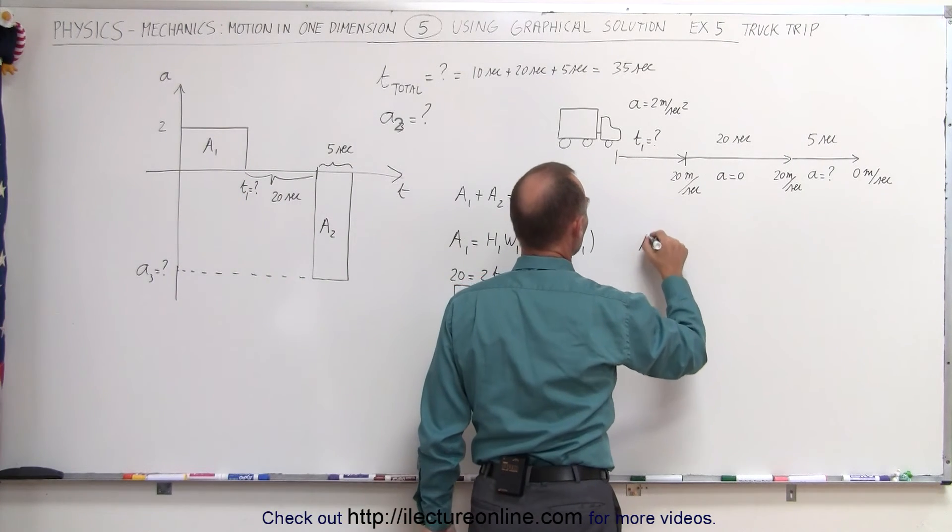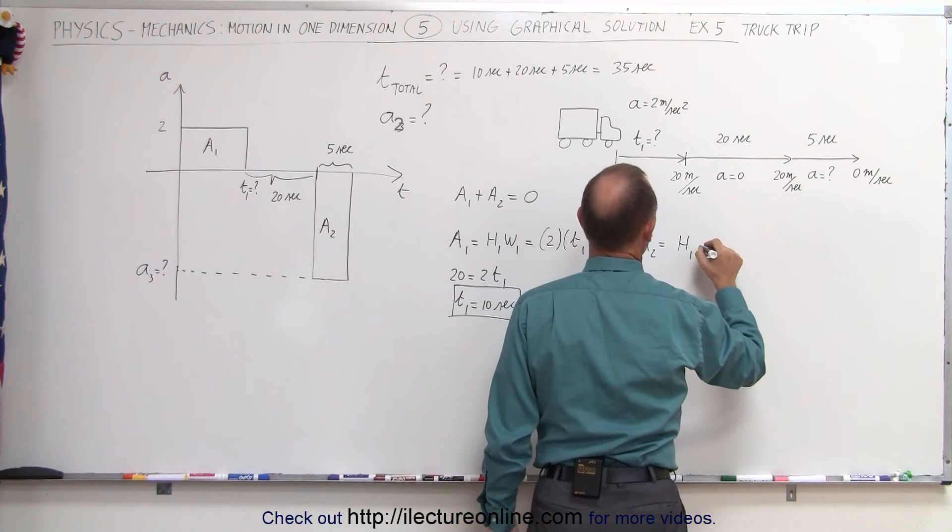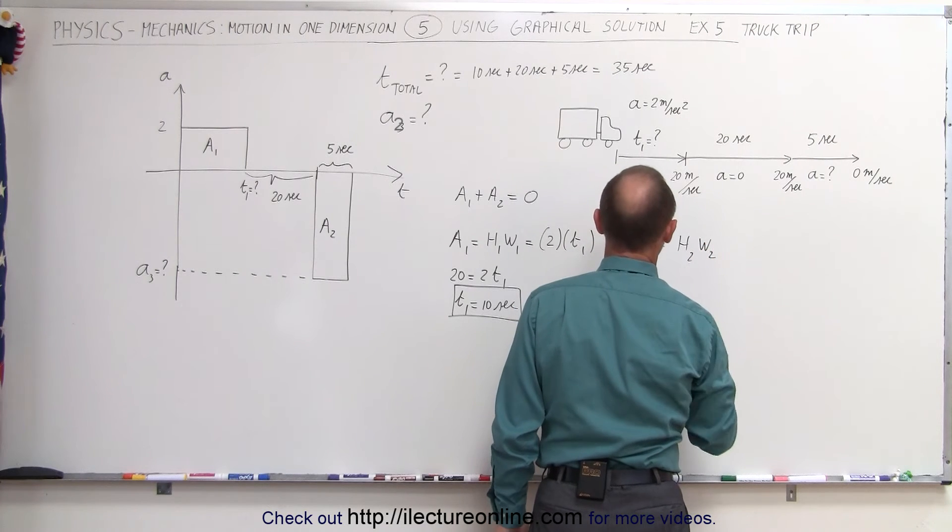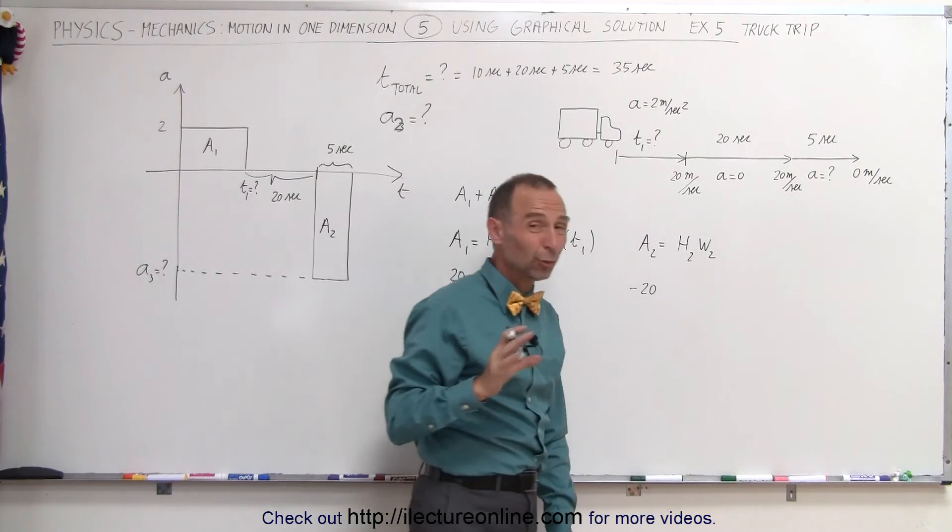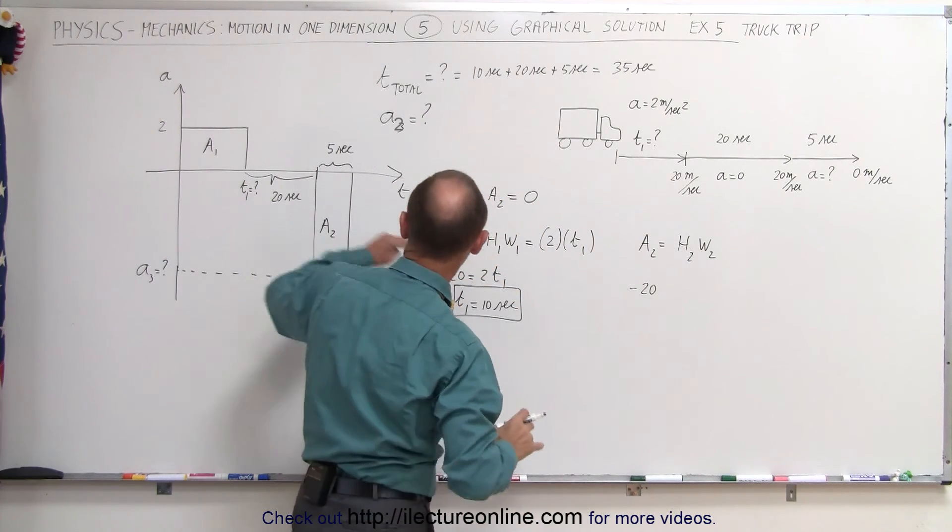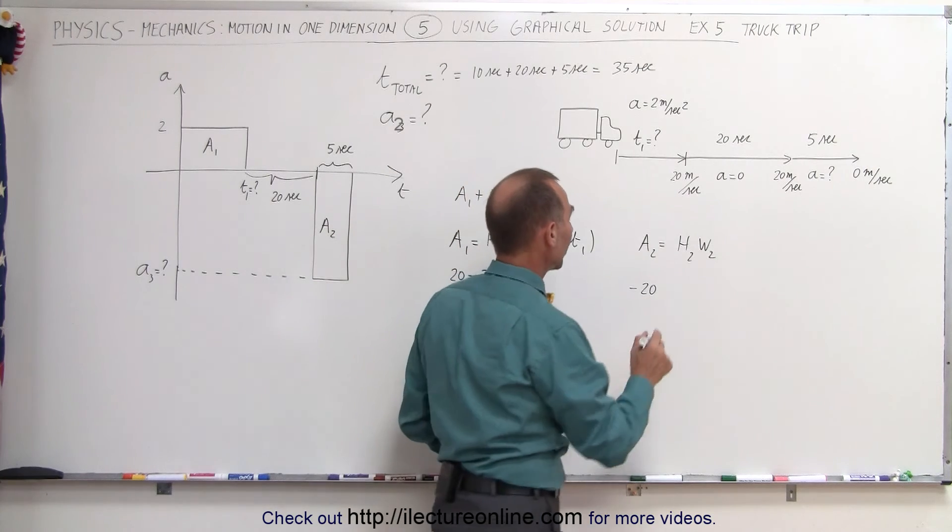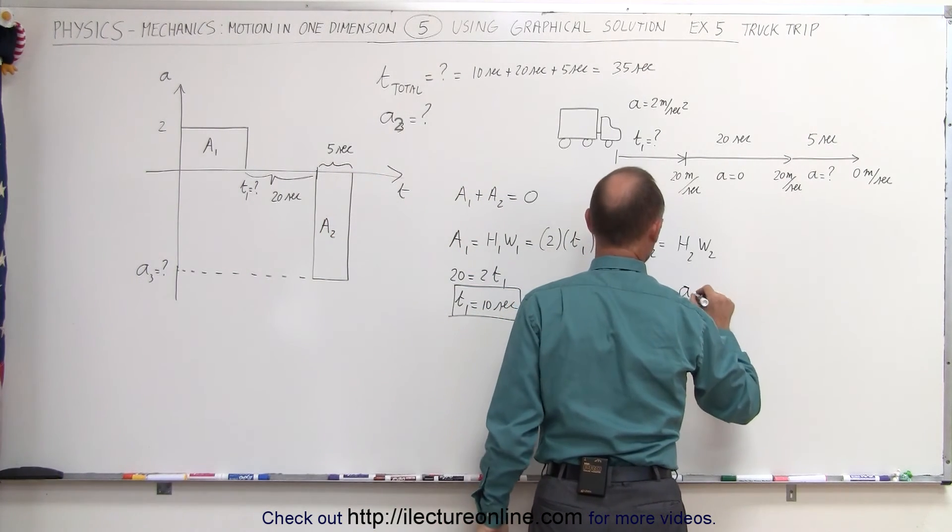area 2. We can say that area 2 is equal to h2 times width 2, and area 2 would be minus 20 because that would be minus 20 meters per second because if we go from a plus 20 to zero that's a decrease of 20 meters per second.